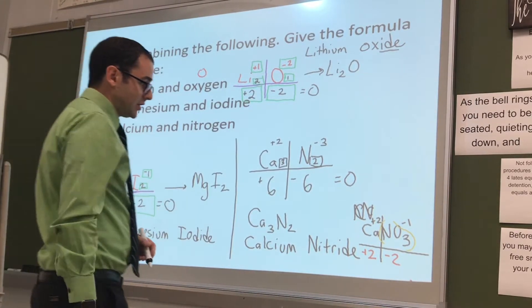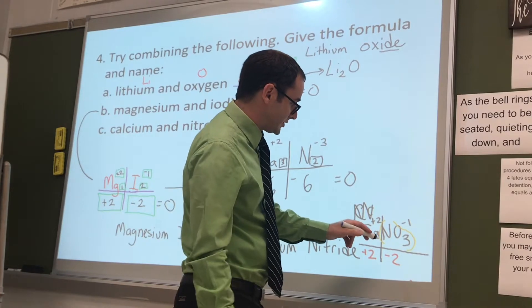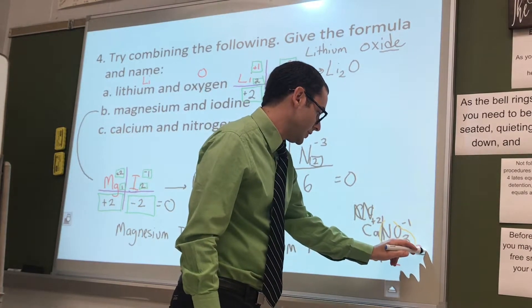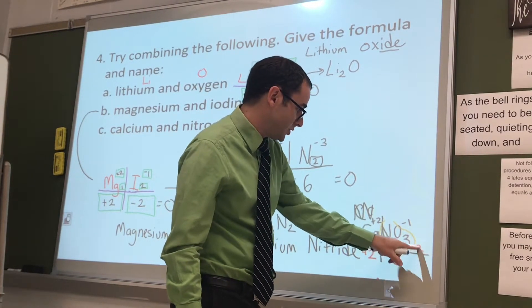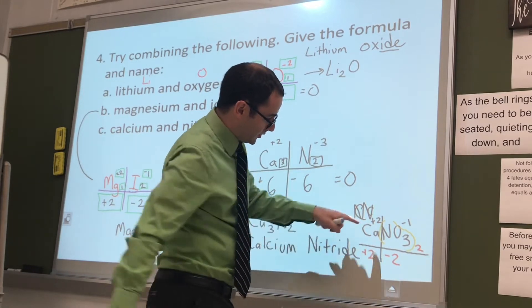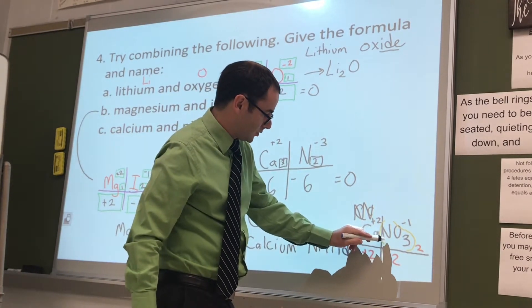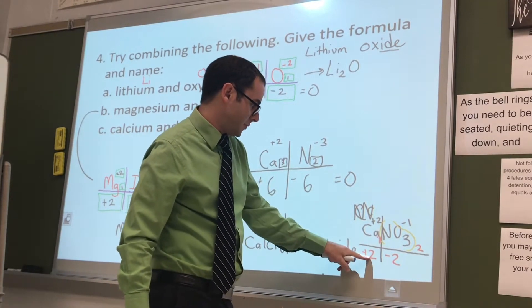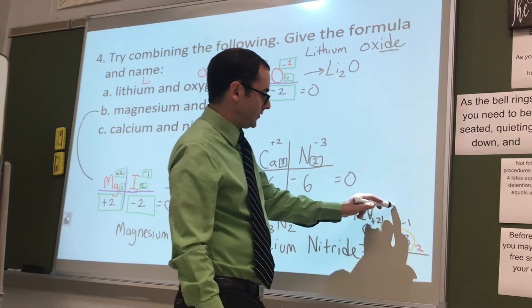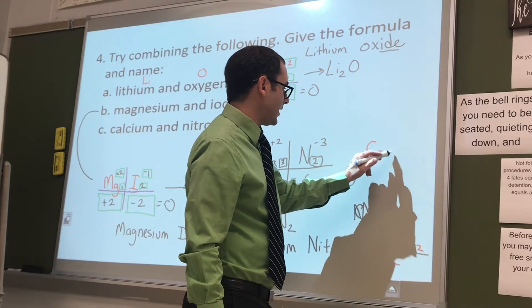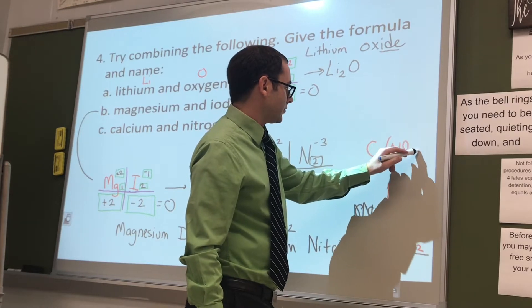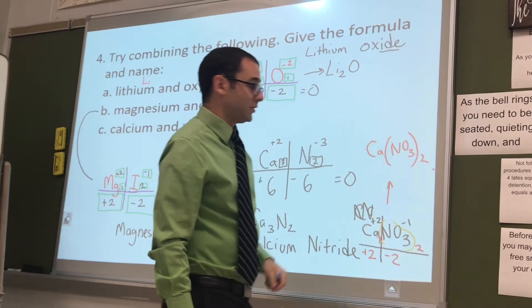So, in this case, you're actually going to put parentheses around it to get a two here. Because negative one times two gives you negative two. Plus two times one gives you positive two there. So, the final formula for this one would be Ca(NO3)2.